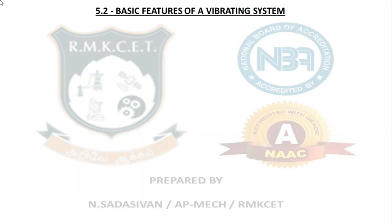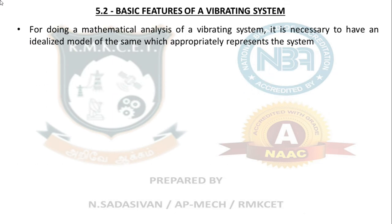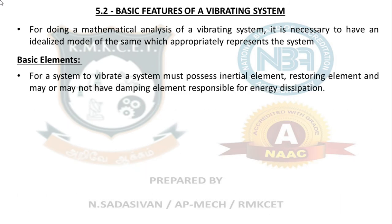Basic features of a vibrating system. For doing a mathematical analysis of a vibrating system, it is necessary to have an idealized model of the same, which appropriately represents the system. A system must possess an inertial element and a restoring element, and may or may not have a damping element.